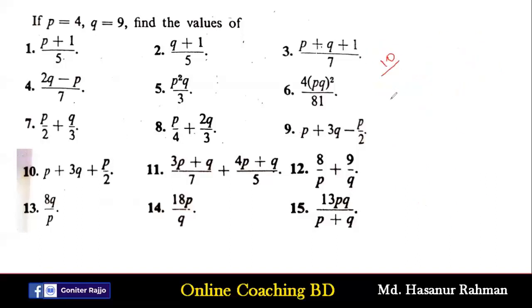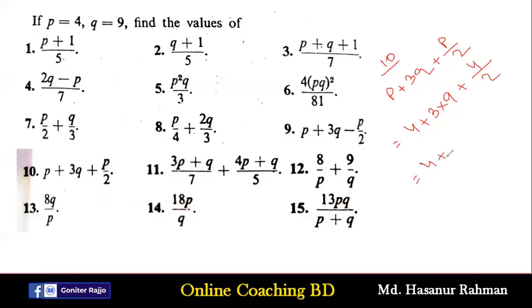Now number 10 says p + 3q + p/2. Instead of p we put 4, plus 3 multiplied by q which is 9, plus the value of p which is 4 divided by 2. That gives 4 plus 27 plus 2, so 4 plus 27 is 31, plus 2 equals 33. That is the solution of number 10.